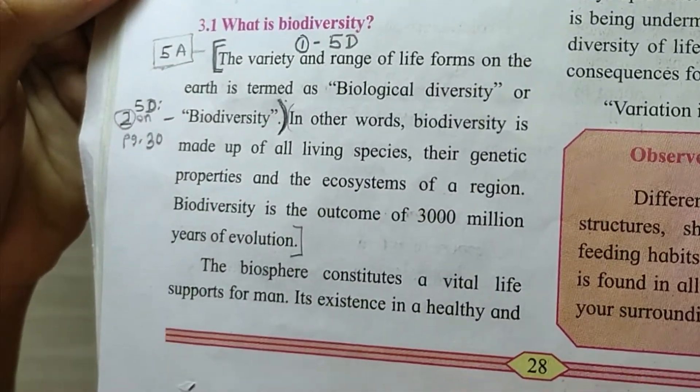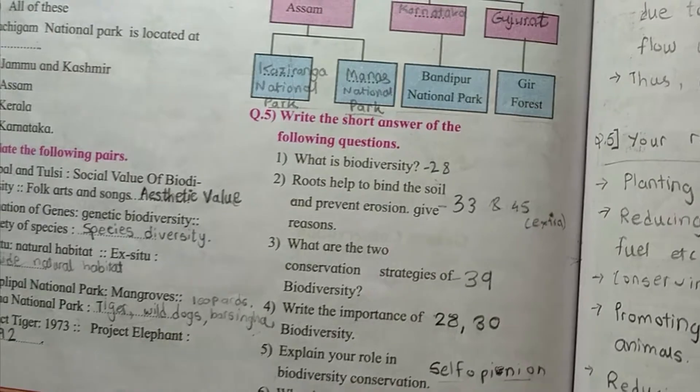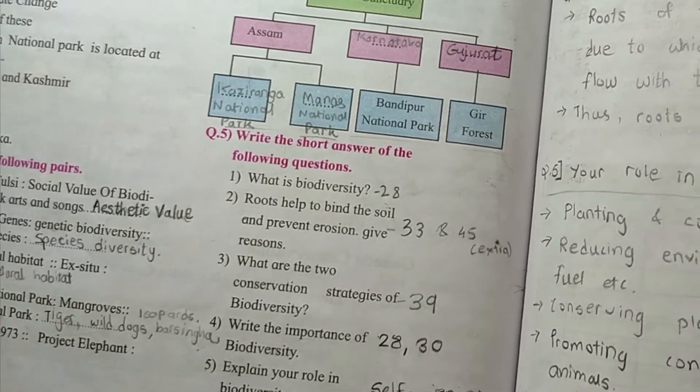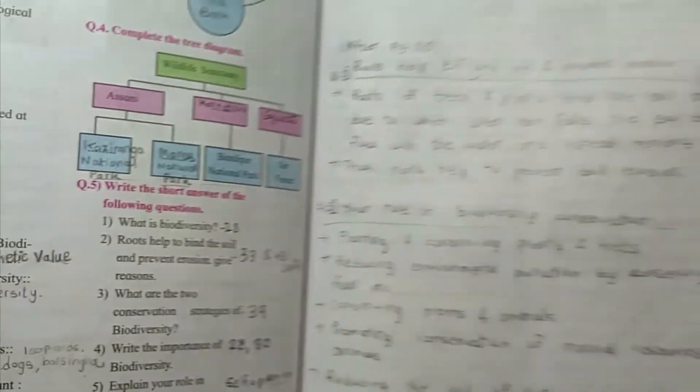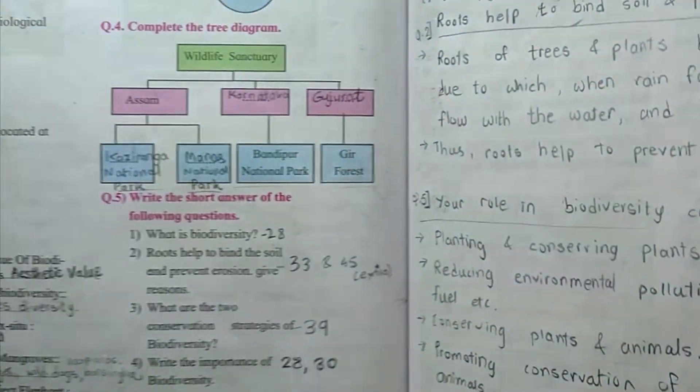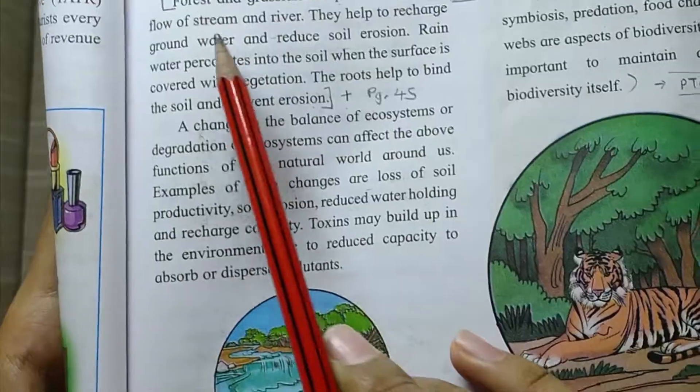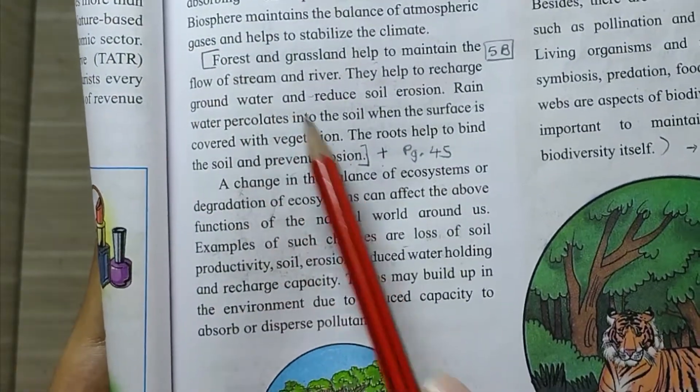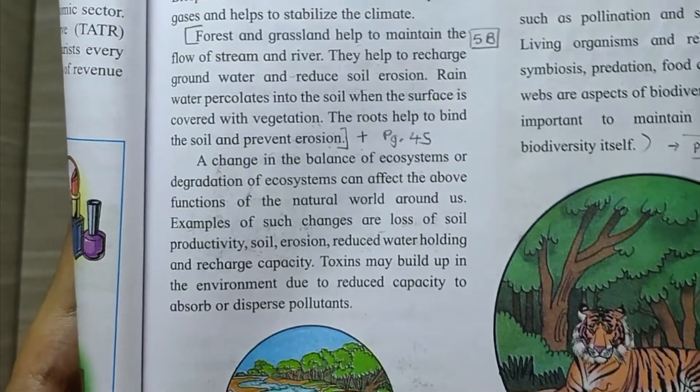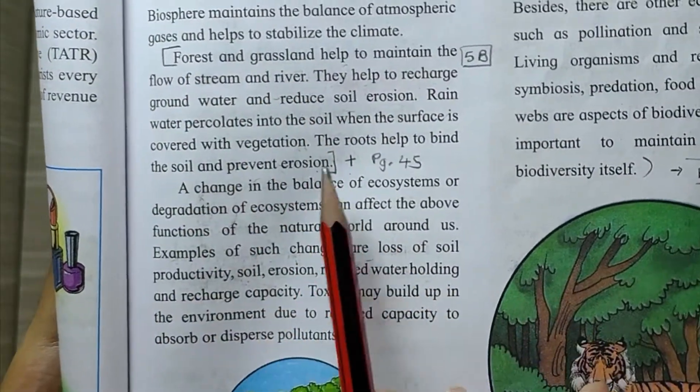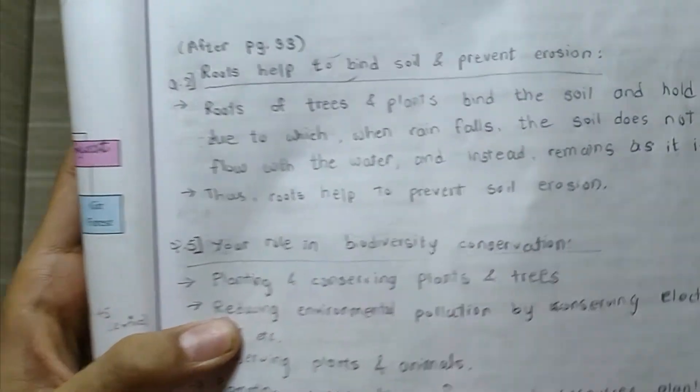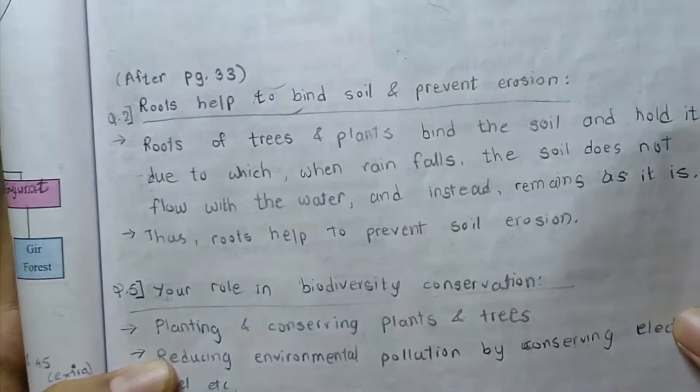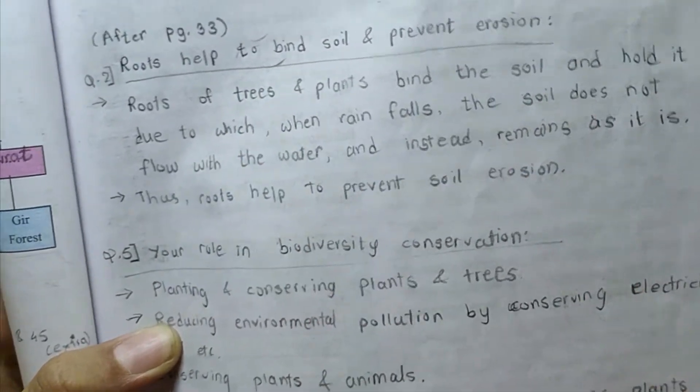Question two, roots help to bind the soil and prevent erosion, give reasons. The answer is on 33 and 45, not 45, it is an extra answer. If you want to write, you can write this also, the answer is on 33. You can write from forest and grasslands to roots help to bind soil and prevent erosion. This is important to write, this is actually self-opinion, so I have written it in my own words, you can also google it.